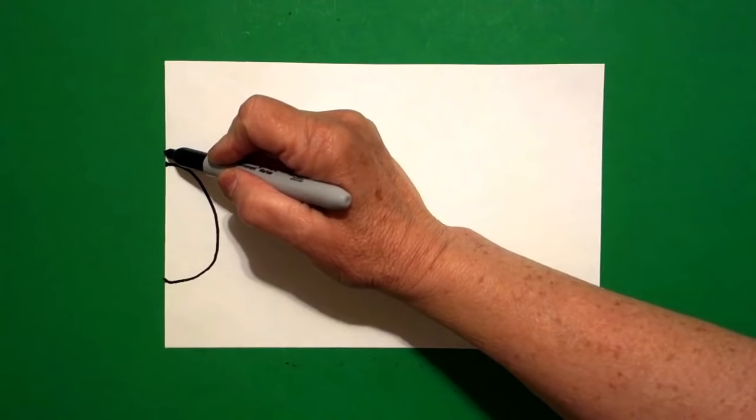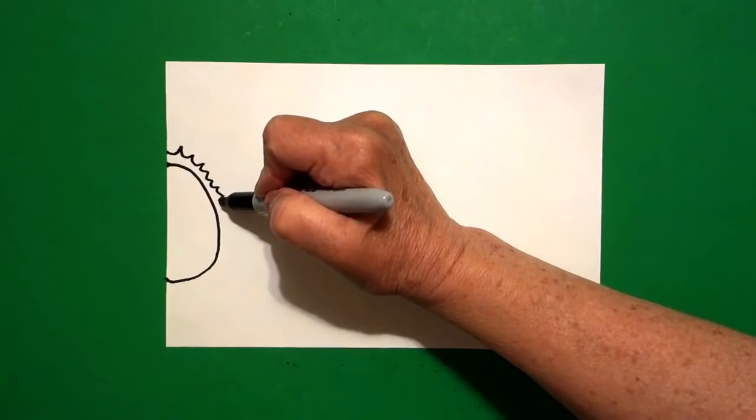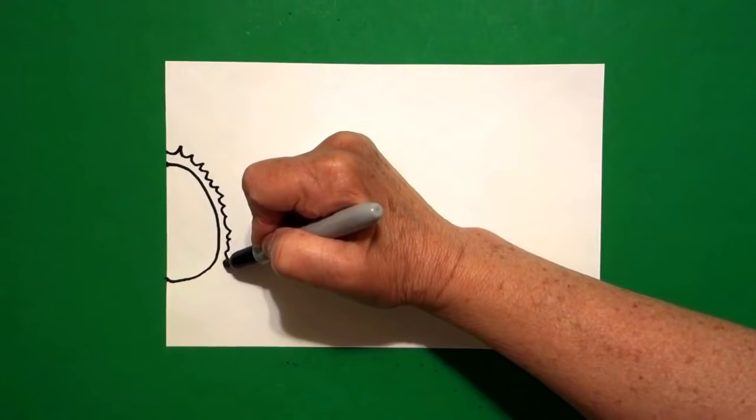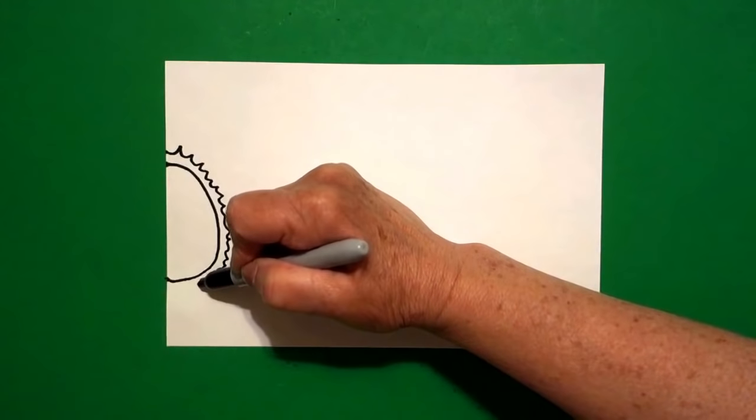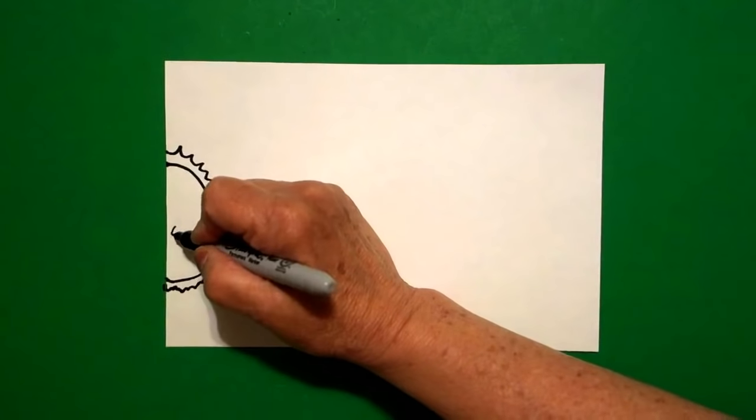And I come right above it and I'm going to draw curved lines and then I'll draw a wavy and then a curved line and then a wavy and a curved line. Keep going, keep going, because this is our sun, S-U-N.